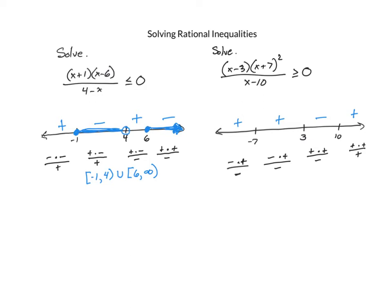Notice the exponents on the factors are odd, even, and odd. When a critical value comes from a factor with an odd exponent, as with the factor for 3 and 10, the signs on either side are different — they bounce. When the critical value comes from a factor with an even exponent, as with x plus 7 squared at negative 7, the signs on either side stay the same. This pattern is handy to remember for both rational and polynomial inequalities.